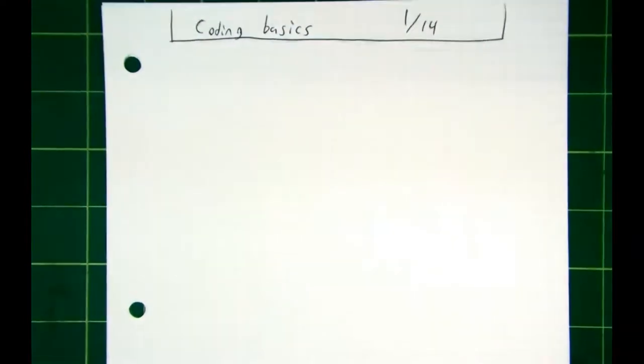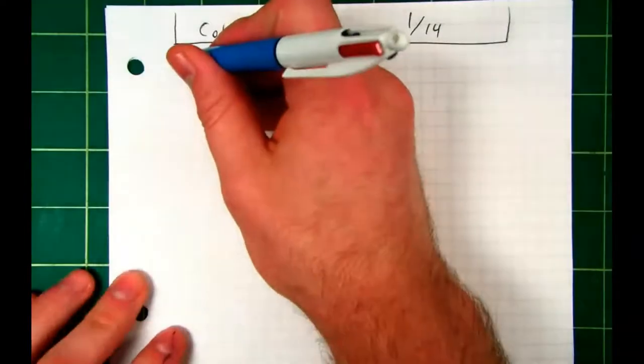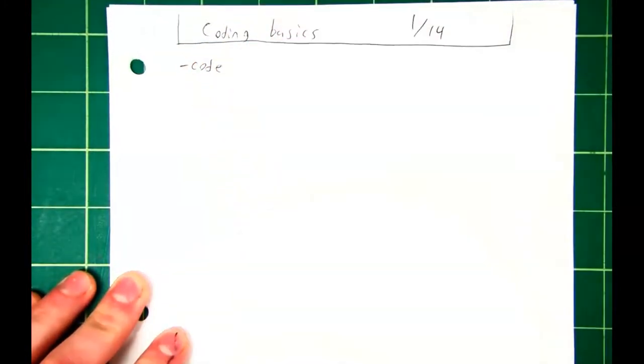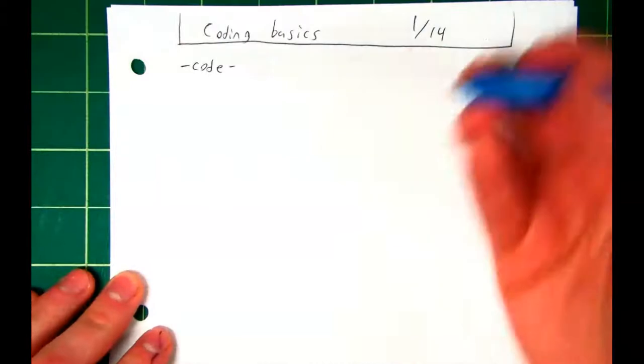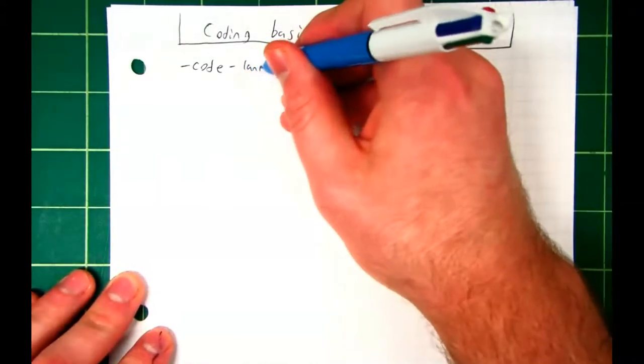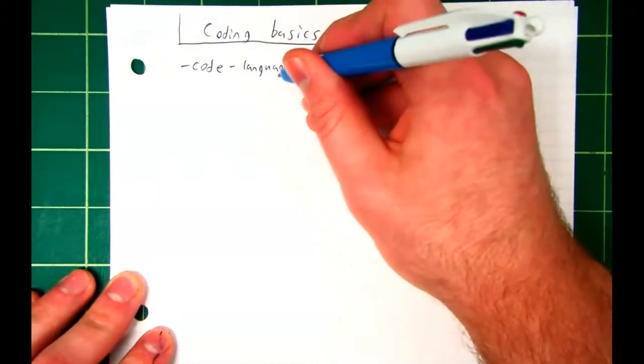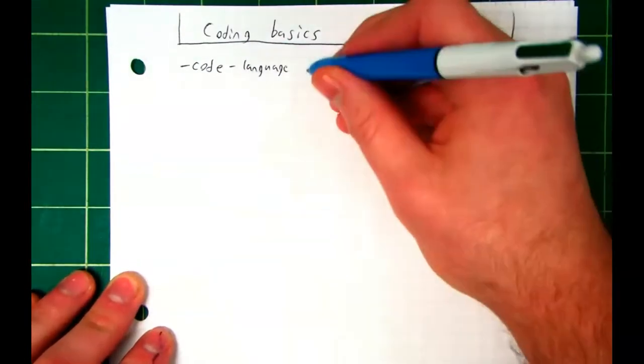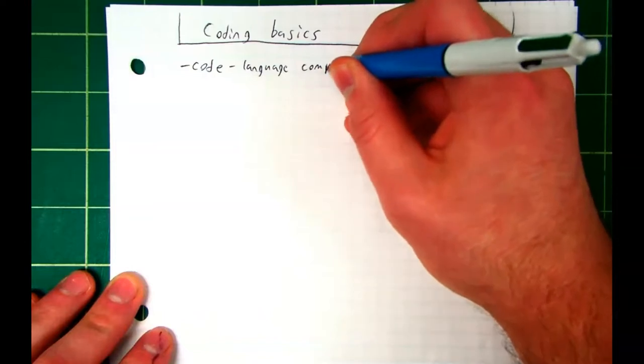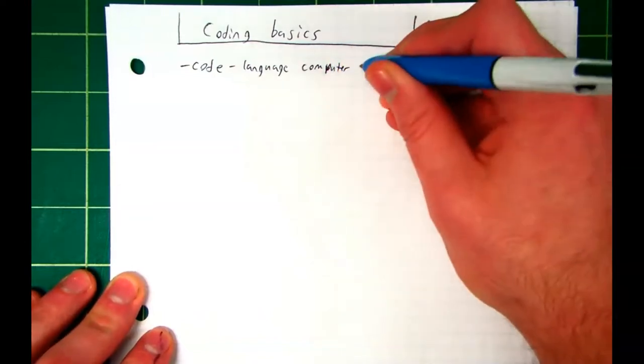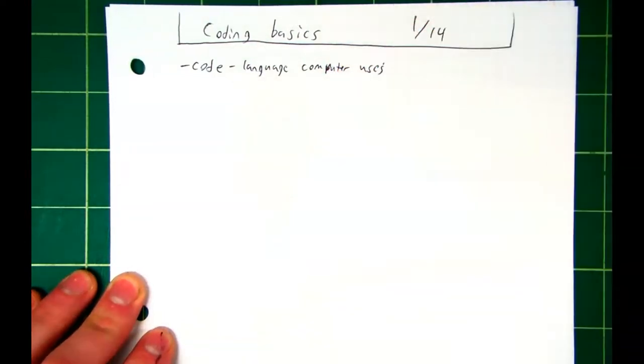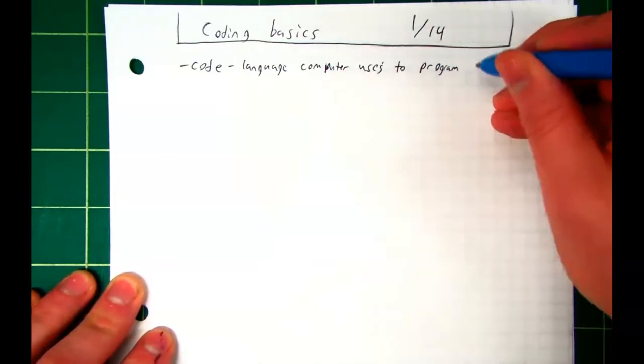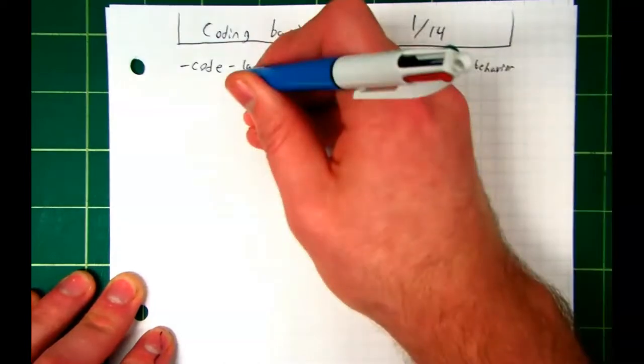The first thing we need to do is define the term code, at least in the way we are going to use it in this class. So the word code is just the language your computer uses to program behavior into robots.